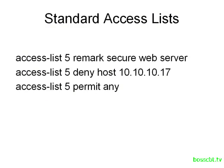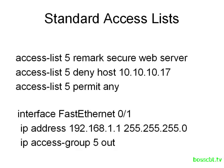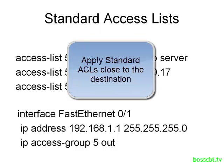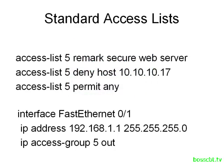However, just creating the access list is not going to do anything — we need to apply it for it to work. An access list can be applied to an interface using the 'ip access-group' command. We apply it on interface FastEthernet0/1: 'ip access-group 5 out'. As a best practice, a standard access list should be applied as close to the destination as possible, so we avoid inadvertently blocking the host from reaching other destinations it's allowed to access.